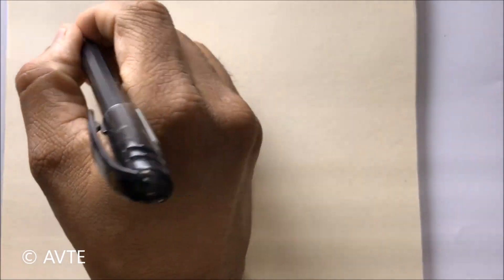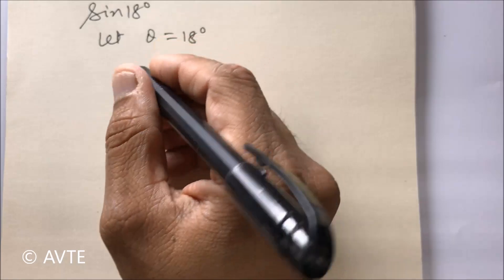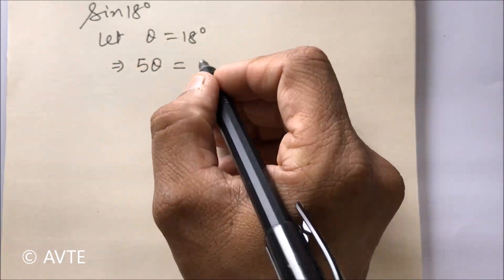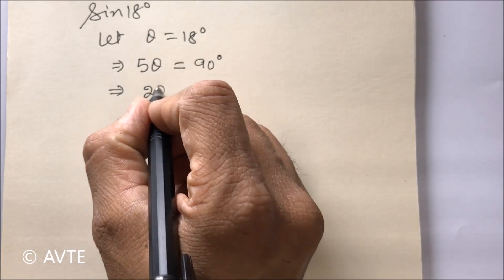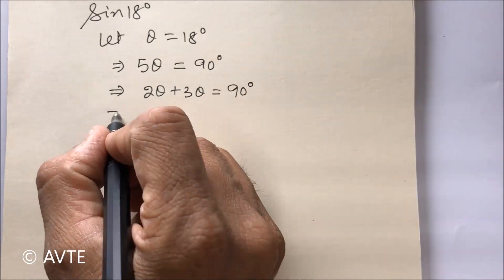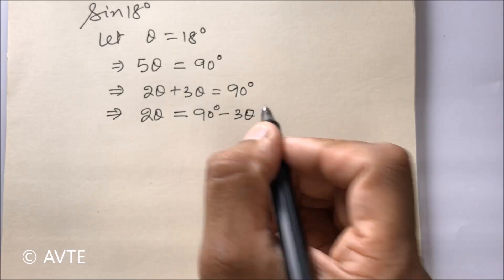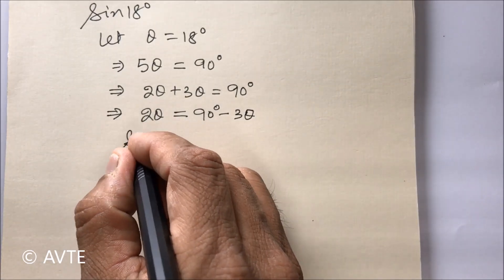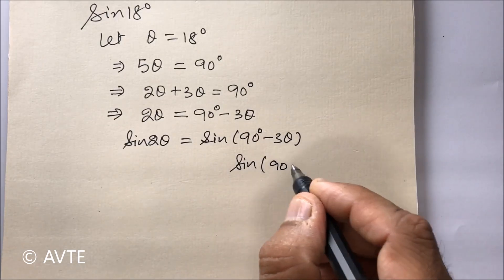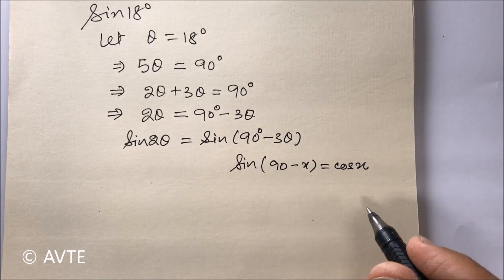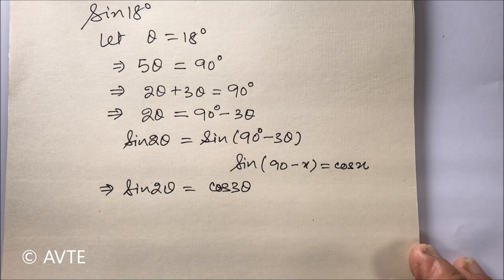In this video we'll find the value of sine 18 degrees. Let theta equal 18 degrees, and multiply both sides by 5 so that 5 theta becomes 90 degrees. Break 5 theta as 2 theta plus 3 theta equals 90 degrees, then transform 3 theta to the other side. Since sine 90 minus x equals cos x by the allied angle or complementary angle identity, we have sine 2 theta equals cos 3 theta.